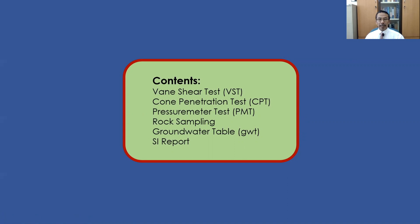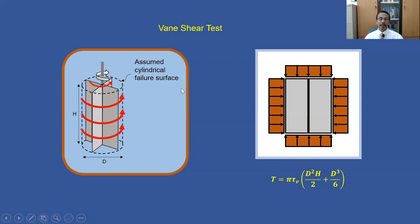In this fourth video, I will be talking about additional methods to obtain subsurface information. Those methods include Vane Shear Test or VST, Cone Penetration Test or CPT, Pressure Meter Test or PMT, Rock Sampling, Ground Water Table, as well as the SI report.